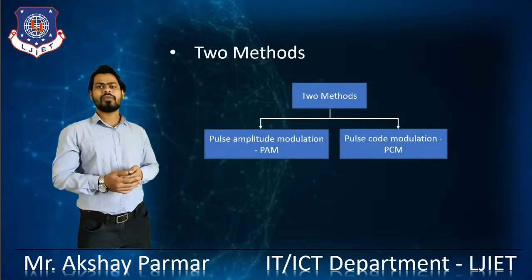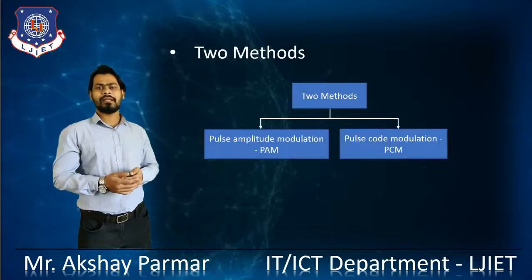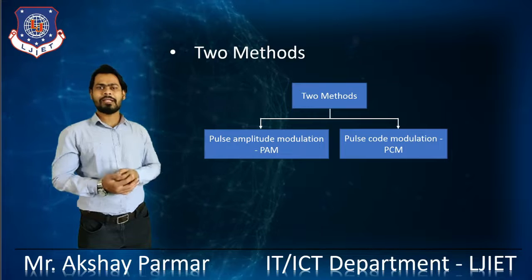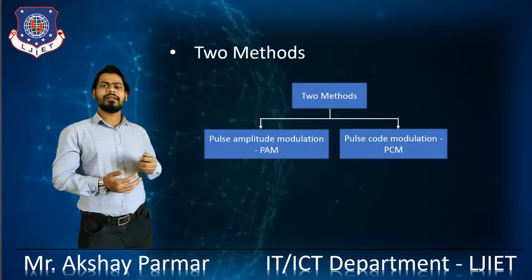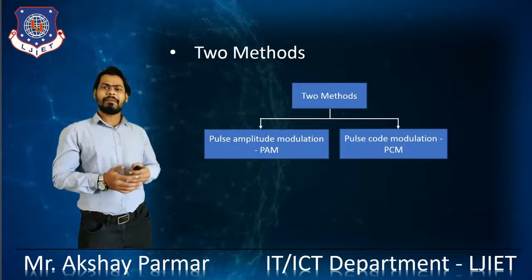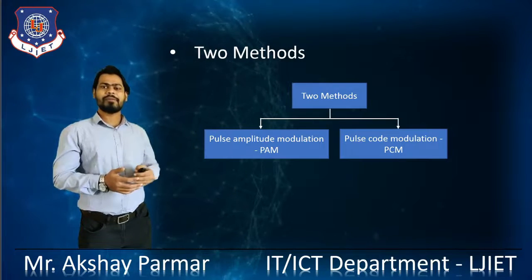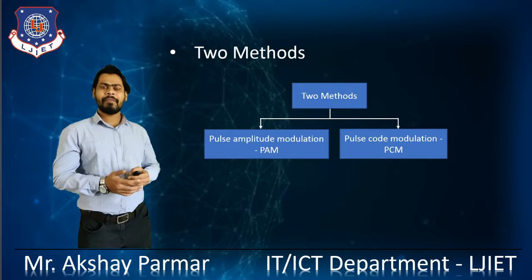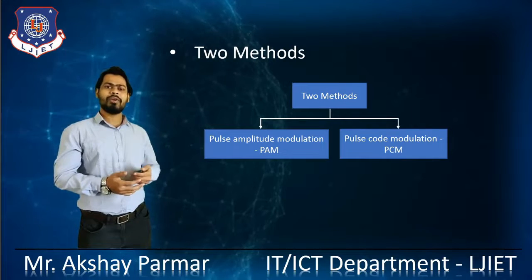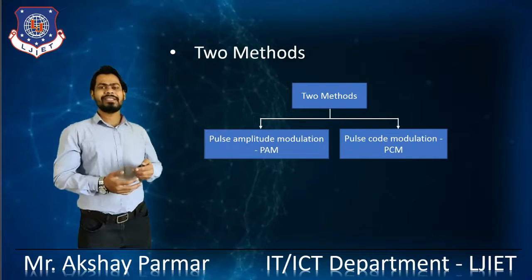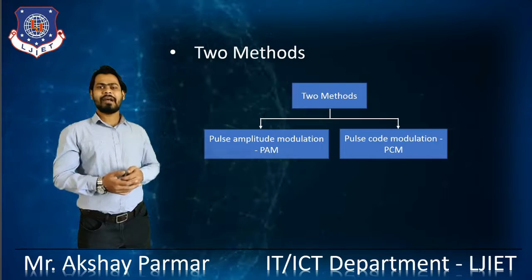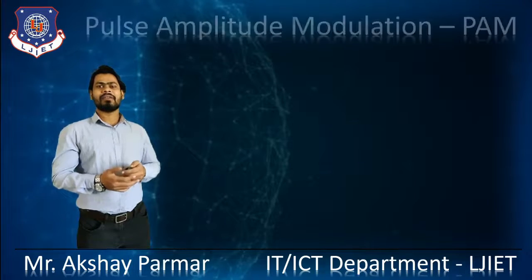So, the two methods to convert the Analog Signal into Digital Signals are: the Pulse Amplitude Modulation (PAM) and the Pulse Code Modulation (PCM). Let's see them one by one.